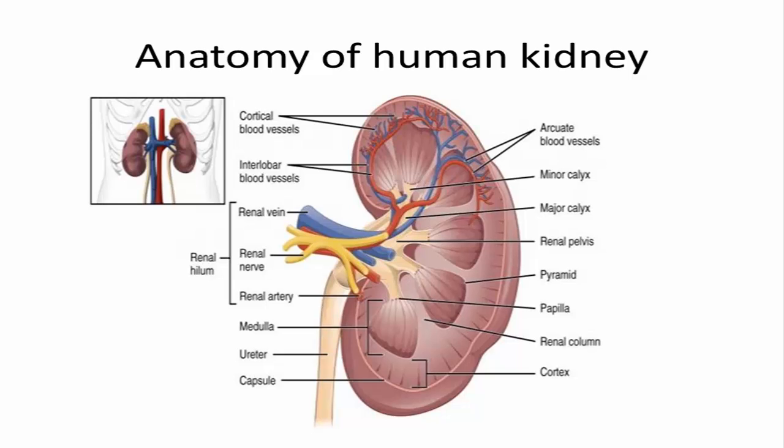The kidneys lie on both sides of the spine in the retroperitoneal space, between the parietal peritoneum and the posterior abdominal wall, also well protected by muscle, ribs and fat. They are roughly the size of your fist, and the male kidney is typically a bit larger than the female kidney.